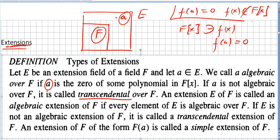An extension E of F is called an algebraic extension of F if every element of E is algebraic over F. So if you pick a, b, c, and every single element, if all elements are algebraic over F, then we say that E is an algebraic extension of F.